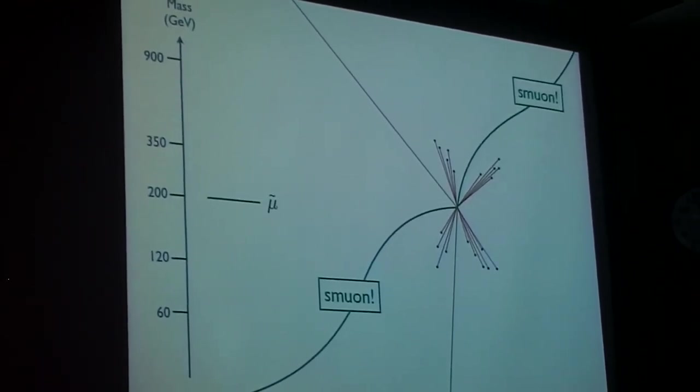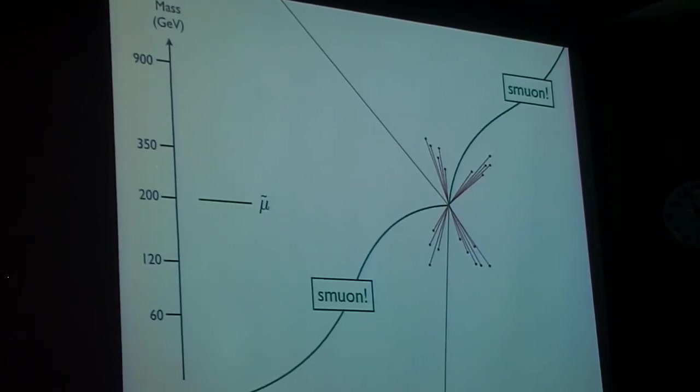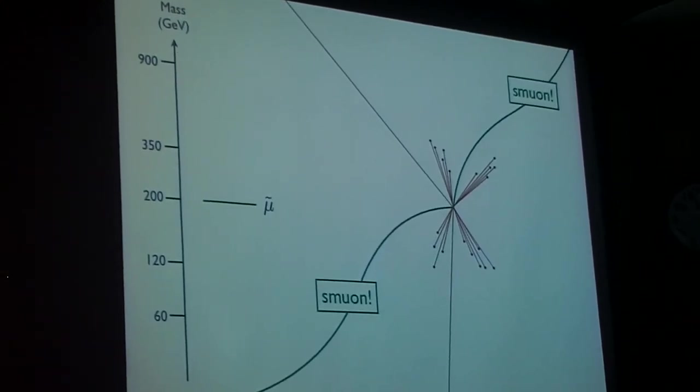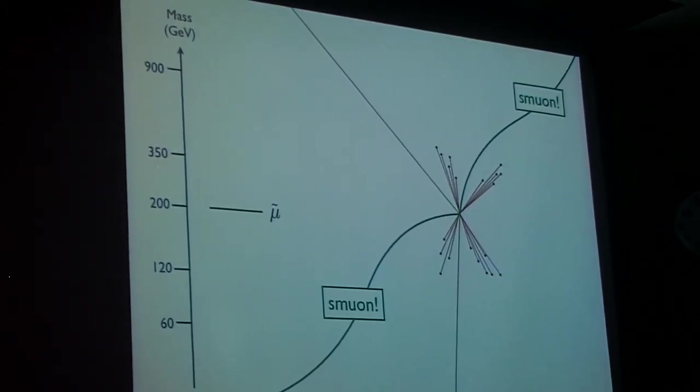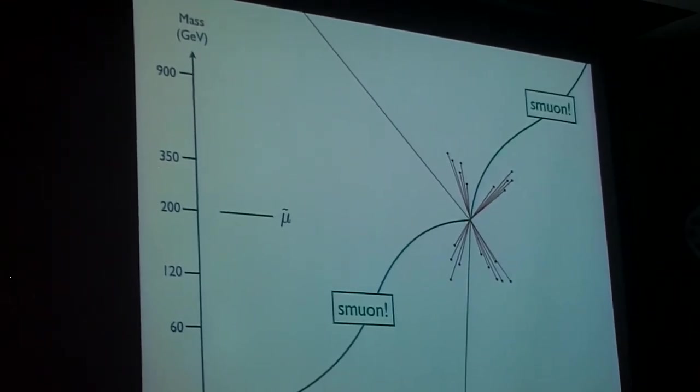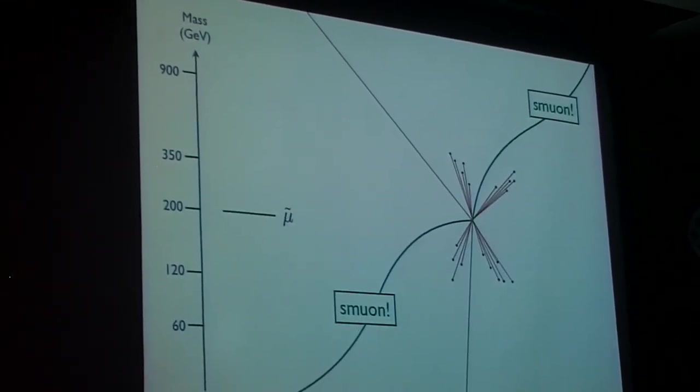The first hint that something interesting might be going on would be the observation of stable or quasi-stable charge tracks. Why do I say stable? At least stable on collider time scales that they would escape through your detector.